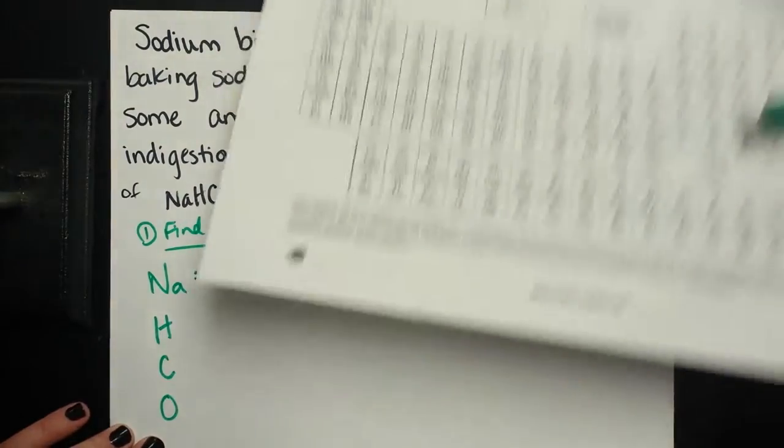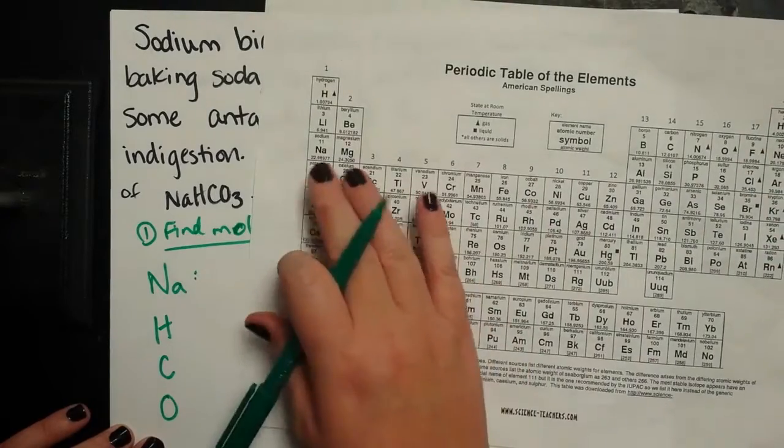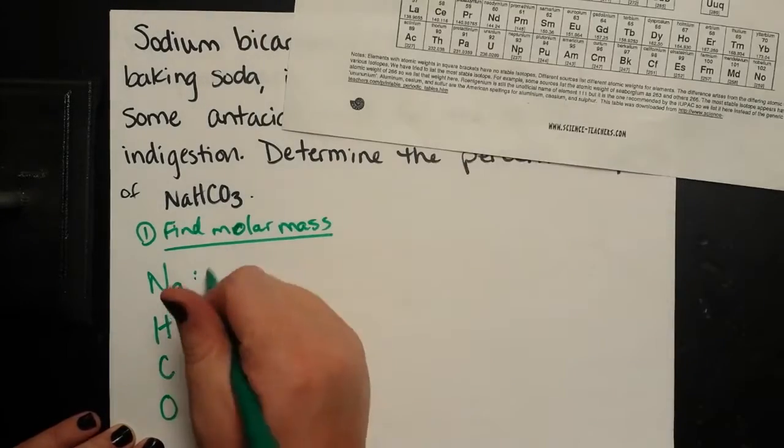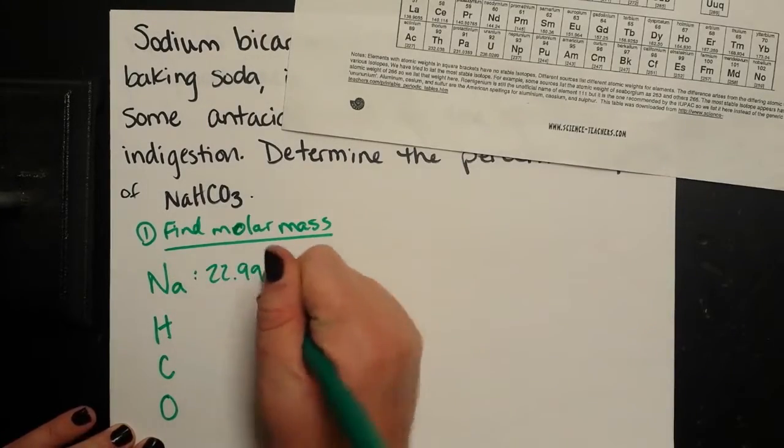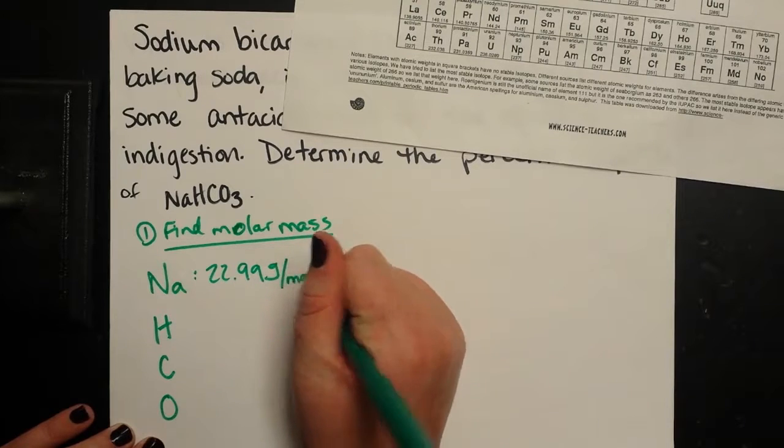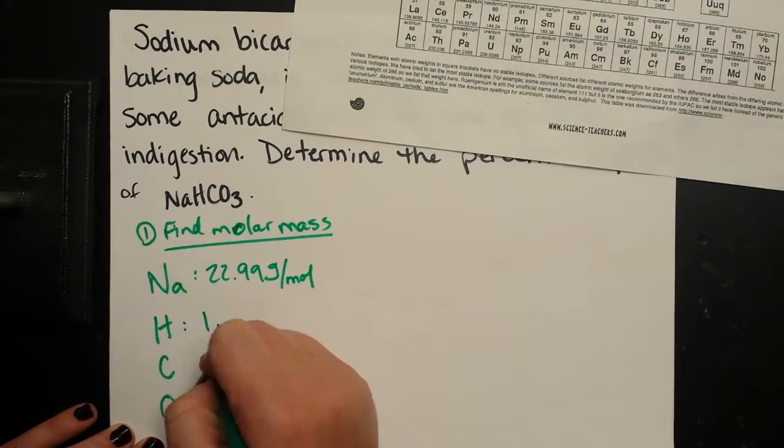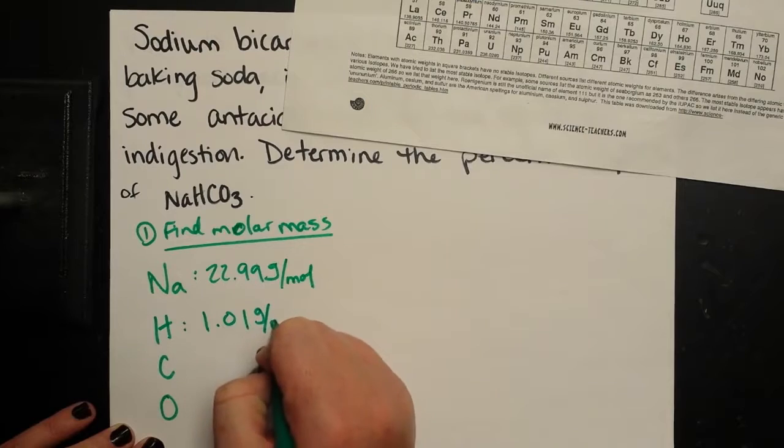If I look on my periodic table, I know sodium's got a molar mass of 22.99 grams per mole. Hydrogen has a mass of 1.01 grams per mole.